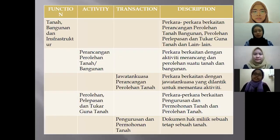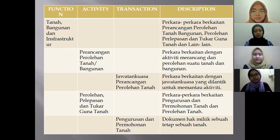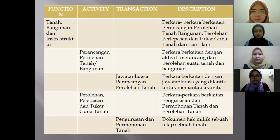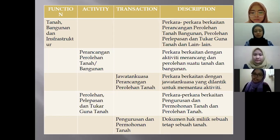Housekeeping file description for code 200 covers tanah, bangunan dan infrastruktur, divided into two activities: perancangan perolehan tanah atau bangunan, and perolehan pelepasan dan tukar guna tanah. For perancangan perolehan tanah atau bangunan, it covers perkara berkaitan dengan aktiviti merancang dan memperoleh tanah dan bangunan. The transaction is jawatan kuasa perancangan perolehan tanah, perkara berkaitan dengan jawatan kuasa yang dilantik untuk memantau aktiviti. For perolehan pelepasan dan tukar guna tanah, it covers pengurusan dan permohonan tanah dan perolehan tanah. The transaction is dokumen hak milik tetap sesebuah tanah.